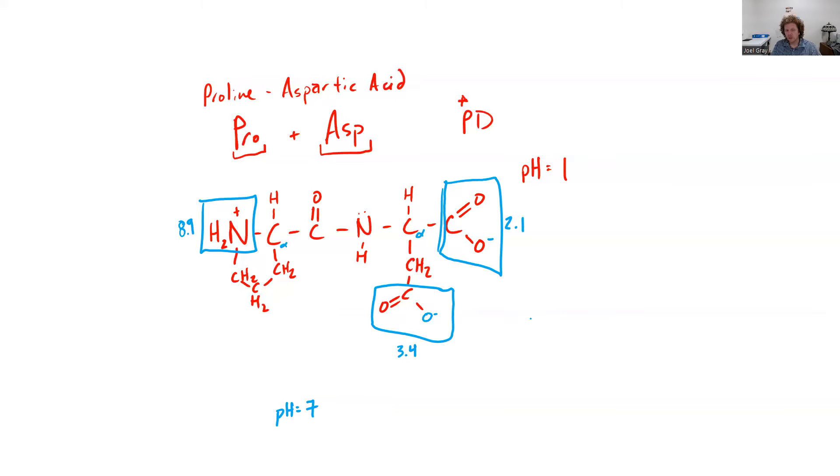So what this ultimately leads to is at a pH of 7, the most common form of this molecule, the predominant form, is going to have an overall charge of -1. The reason for that is we've got a negative charge here, a negative charge here, and a positive charge here. So one positive cancels out a negative, leaving behind only one negative.